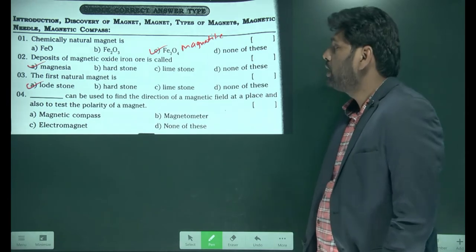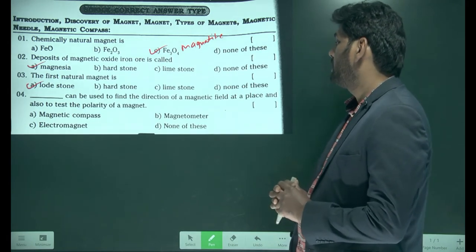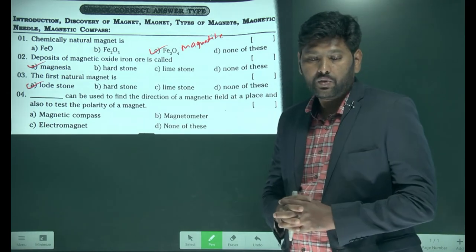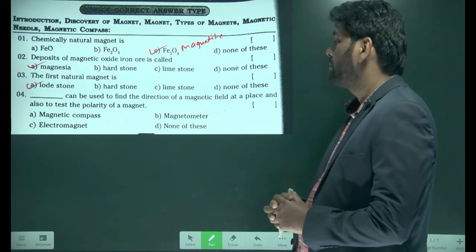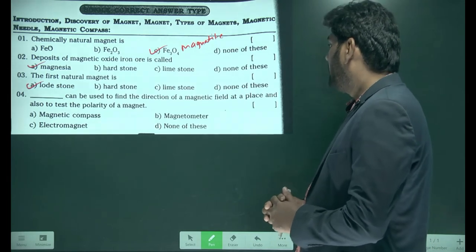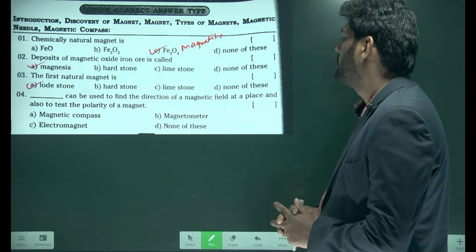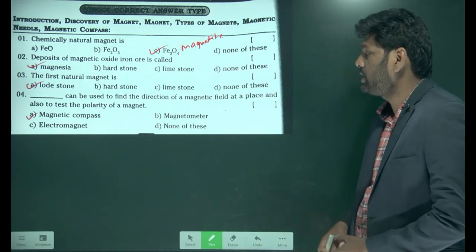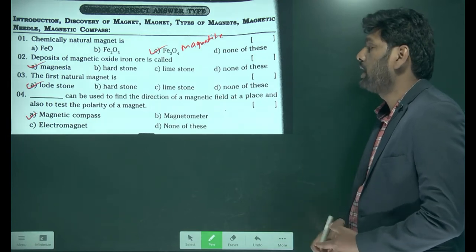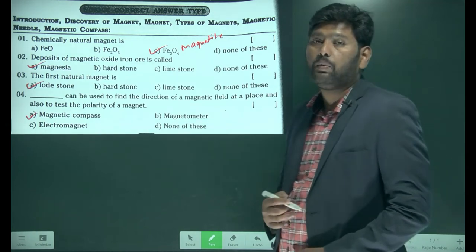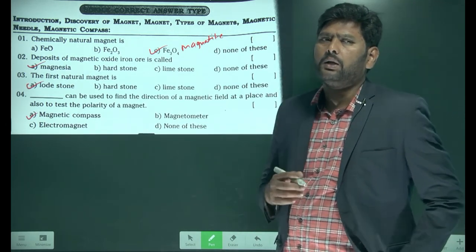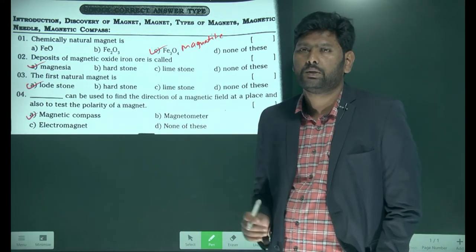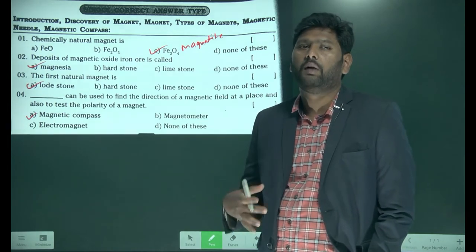Next: what can be used to find the direction of the magnetic field at a place and also test the polarity of the magnet? Simply, the magnetic compass will give the direction of the magnetic field as well as test the polarity. Polarity means finding the north pole and south pole — having the poles is nothing but having polarity.